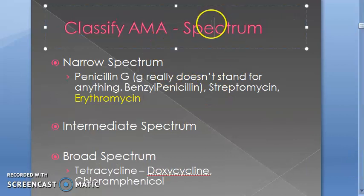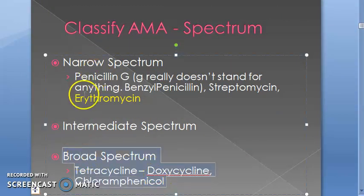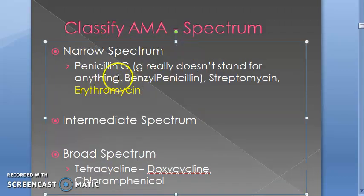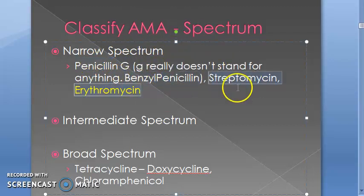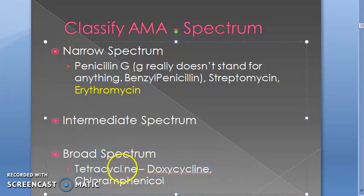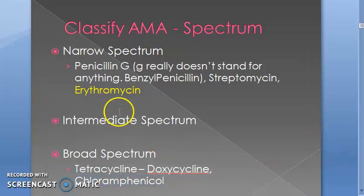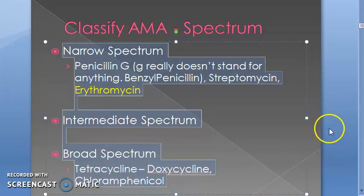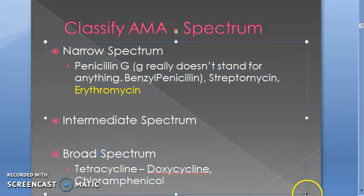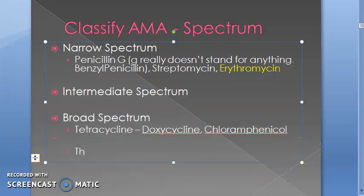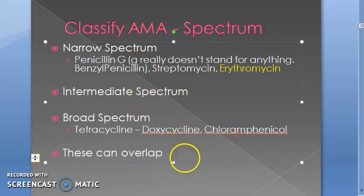The next classification is based on spectrum: narrow spectrum, intermediate spectrum, and broad spectrum. Narrow spectrum examples include penicillin G (benzyl penicillin), streptomycin, and erythromycin. Broad spectrum examples include tetracycline (doxycycline) and chloramphenicol. Note that this classification is not very clear — things can overlap. It is not absolute.